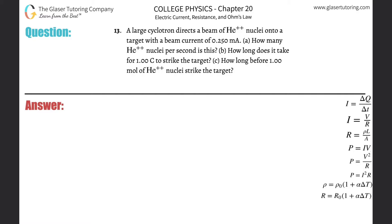Number 13. A large cyclotron directs a beam of helium-2+ nuclei onto a target with a beam current of 0.25 milliamps. Letter A: how many helium nuclei per second is this?